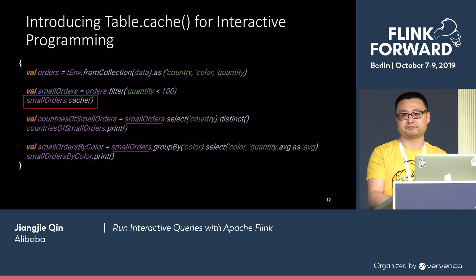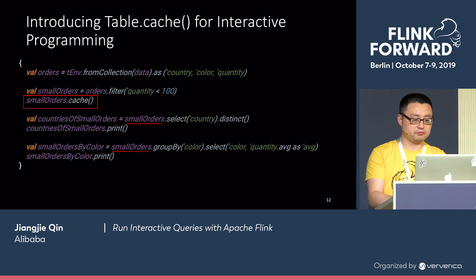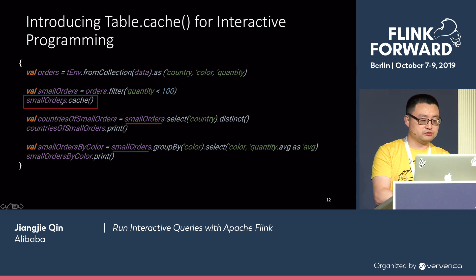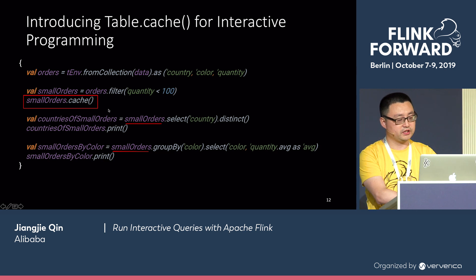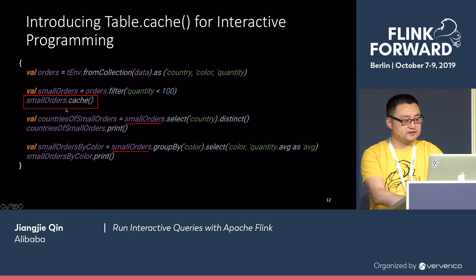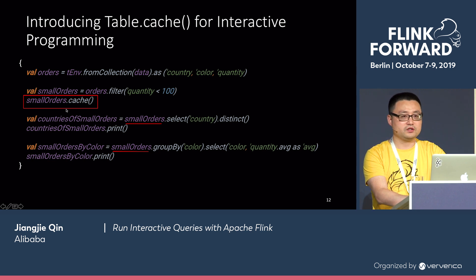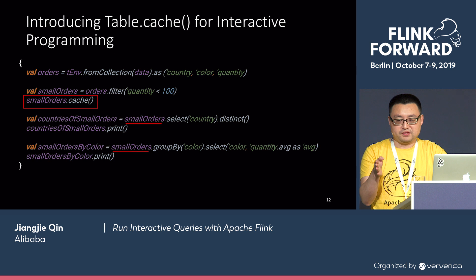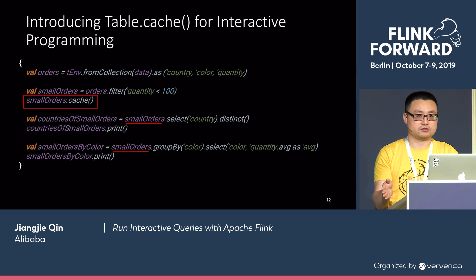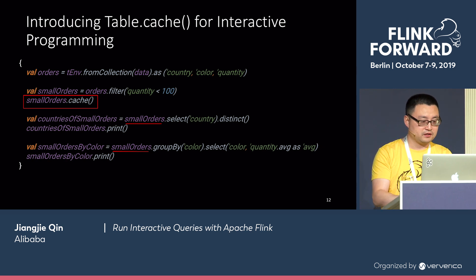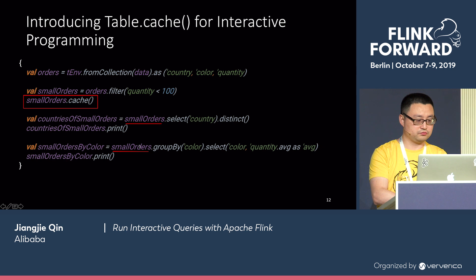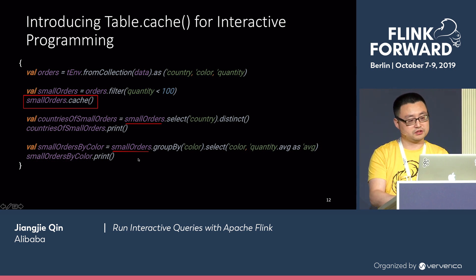With that change, when we look at this program again, we actually need to add one more method to our Table API. What we need is to add a cache() method. So after we compute the small orders, we can just call smallOrders.cache(). That will tell Flink: after you compute small orders, please save it in the Flink cluster — do not delete it after the job finishes, because I'm going to use it later. The two subsequent usages of small orders will not recompute them, but will just use the cached results.